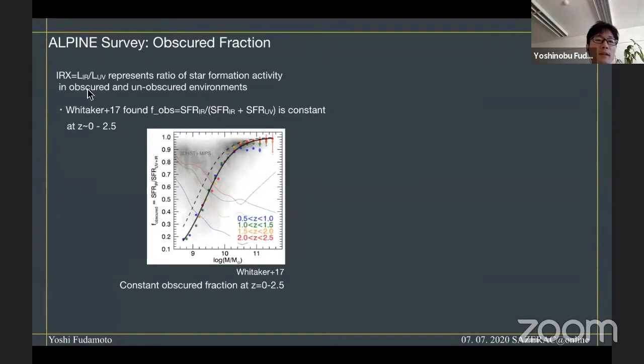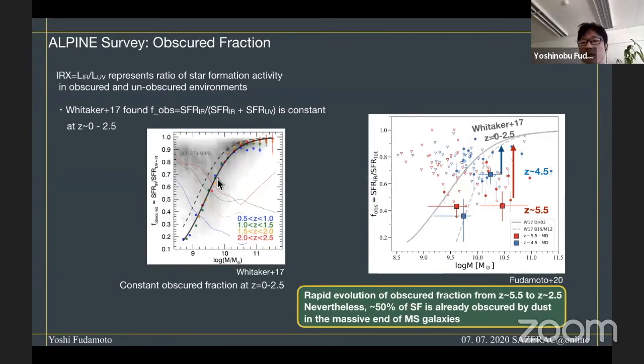Another interesting point of looking at this IRX value is that because IRX, infrared excess, is defined by the ratio between star formation rate from infrared and ultraviolet, we can study the obscured fraction of star formation rates. For instance, Whitaker et al. 2017 has found that the obscured fraction of galaxies, defined by infrared star formation rate divided by total star formation rate, is pretty much constant at between redshift 0 to 2.5. If we plot our galaxies to this diagram, it shows that our galaxies, in particular for the redshift 5.5 galaxies, show very low obscured fractions, suggesting very rapid evolution of dust obscuration between these redshifts.